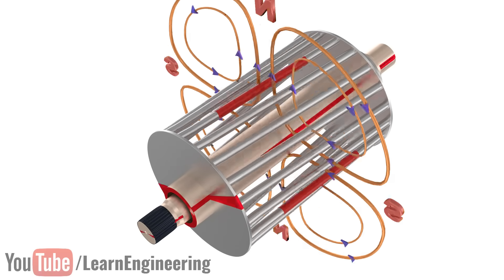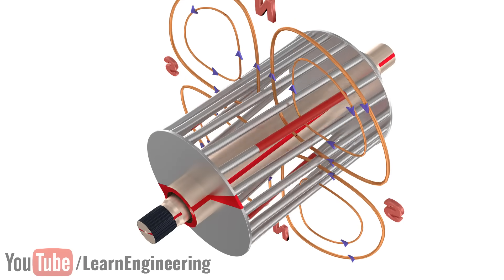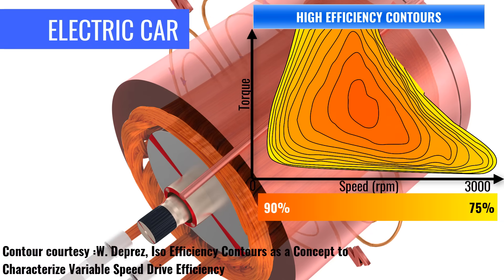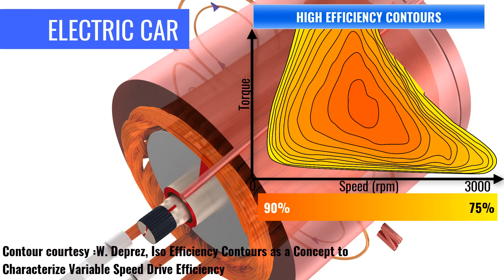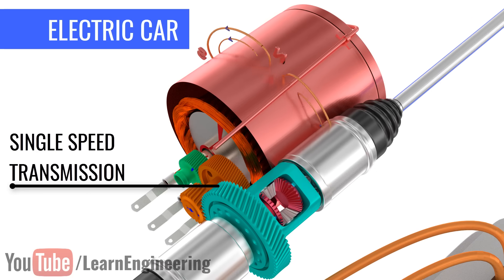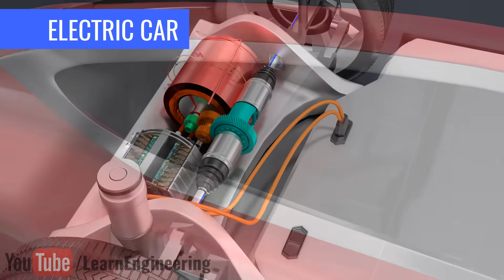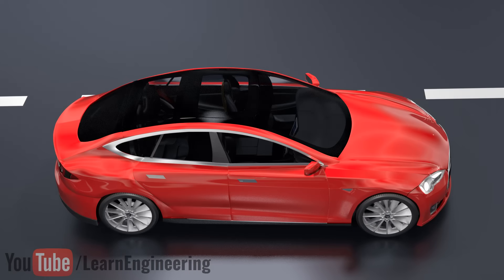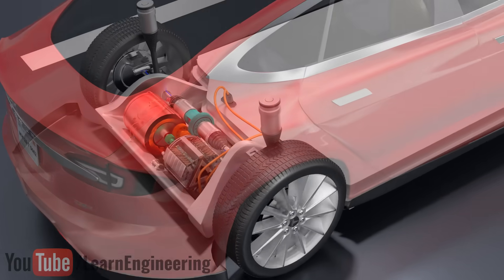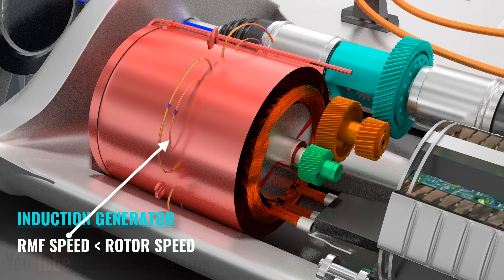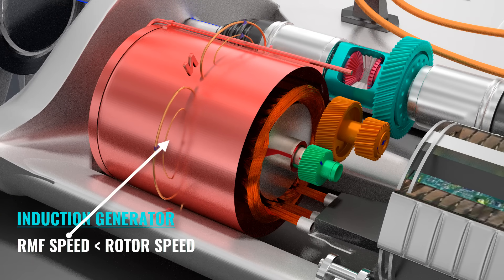This property makes induction motors an attractive choice for elevators, cranes, and even electric cars. Due to the high speed band of induction motors, electric cars are capable of running with a single-speed transmission. Another interesting property is that when the rotor is moved by a prime mover, the induction motor can also act like a generator. In this case, you have to make sure that the RMF speed is always less than the rotor speed.